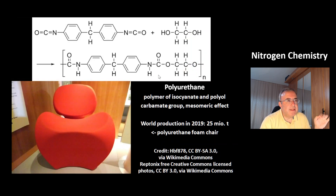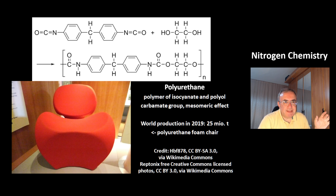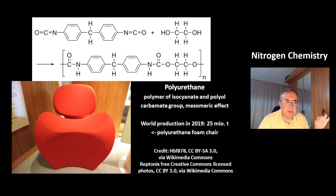This is the structure of polyurethane — a polymer of isocyanate and polyol. This reaction works because you get the carbamate group, NHCOO, which is stabilized by the mesomeric effect. This is an important polymer — world production in 2019 was 25 million tons. One example of the uses of polyurethane is a foam chair.